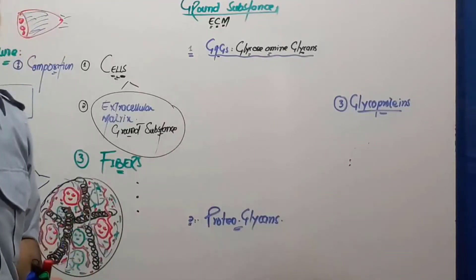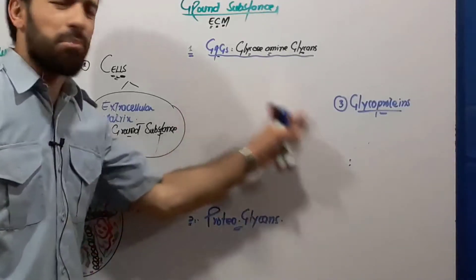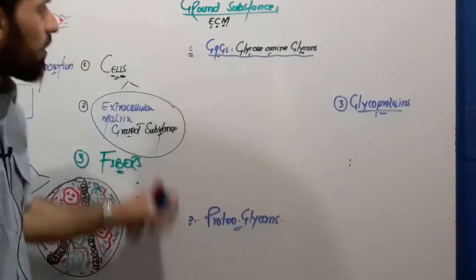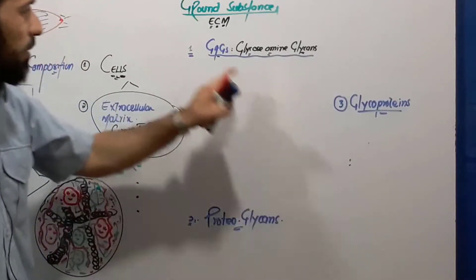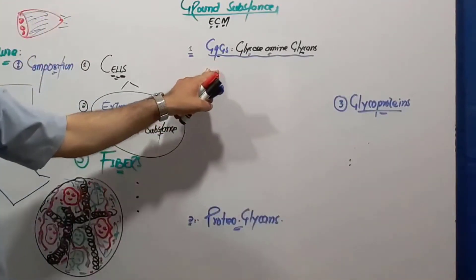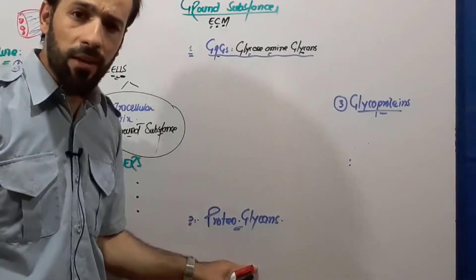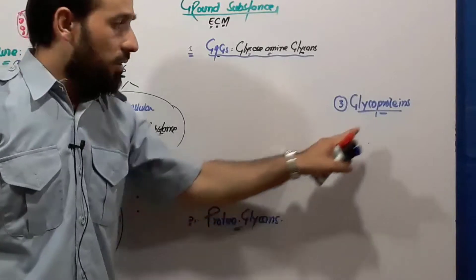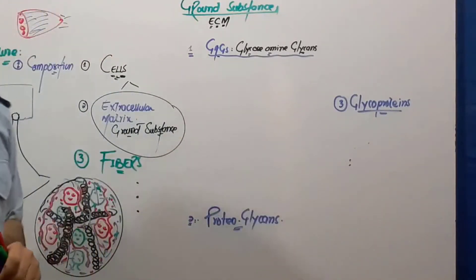In every connective tissue there will be presence of all of these three components. There will be glycosaminoglycans, there will be proteoglycans, and there will be glycoproteins also.